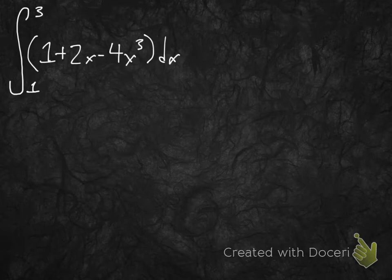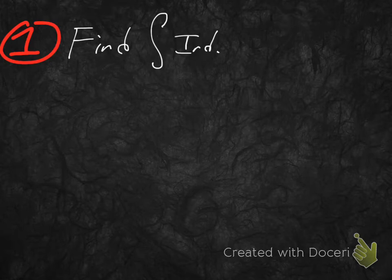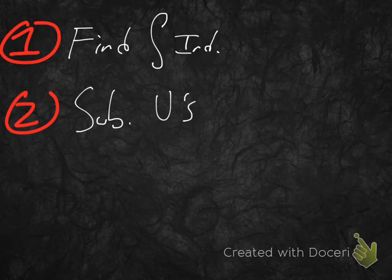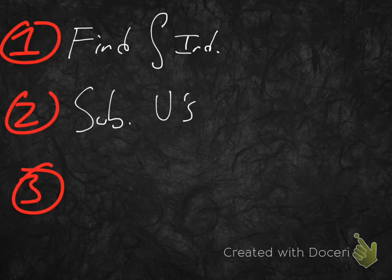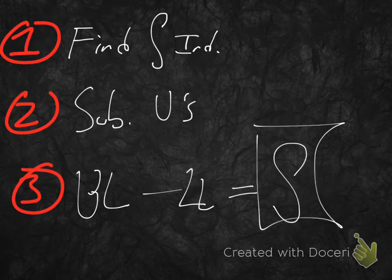There are three steps to taking definite integrals. Step 1: find the indefinite integral — also called the antiderivative. Step 2: substitute values. Step 3: take our answer from the upper limit of integration, subtract our answer from the lower limit of integration, and that gives us our definite integral.